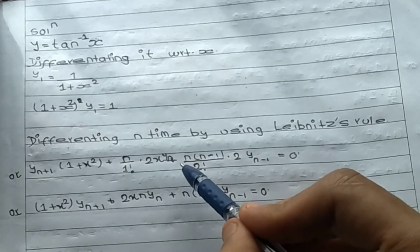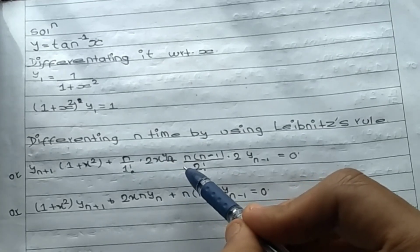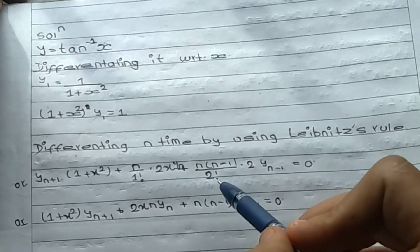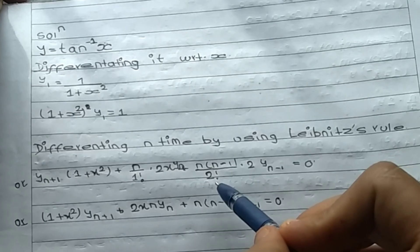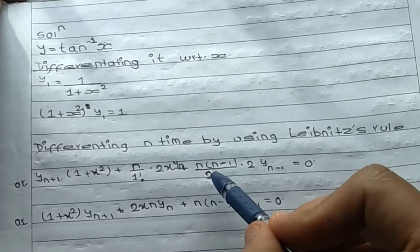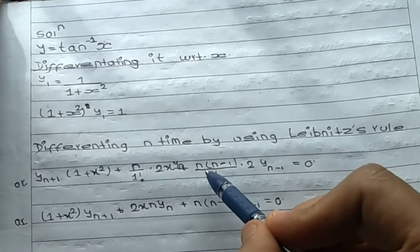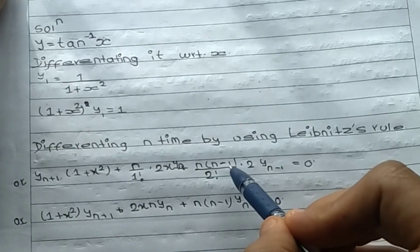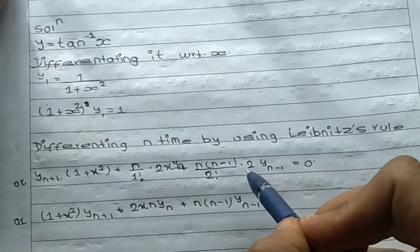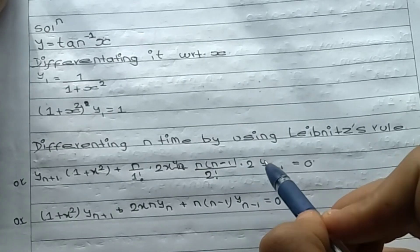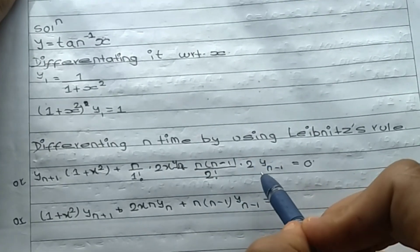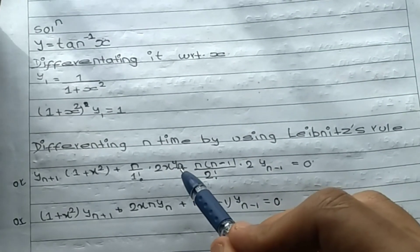1 plus x squared. Derivative 0. Different set. n plus n(n minus 1) by 2 factorial. 2x derivative 2y by y_(n minus 1) is equal to 0.